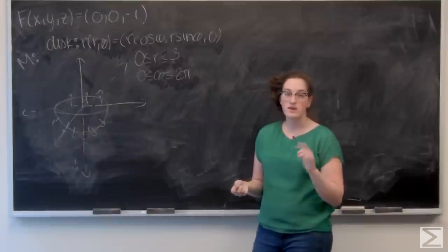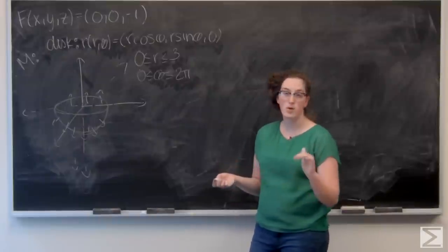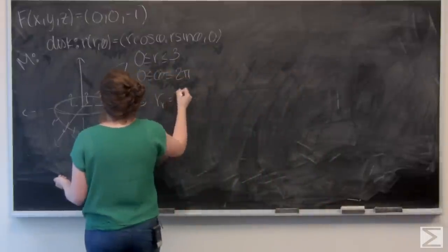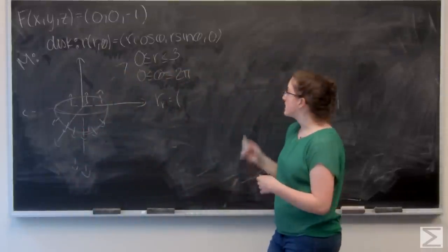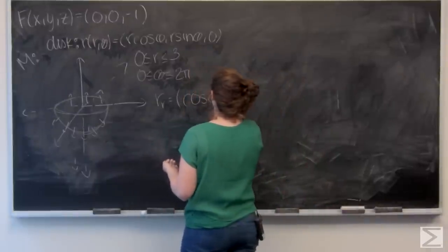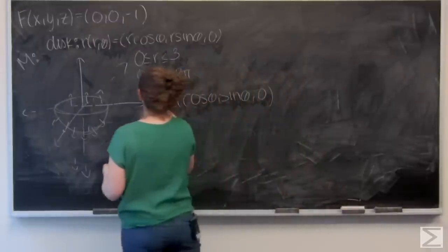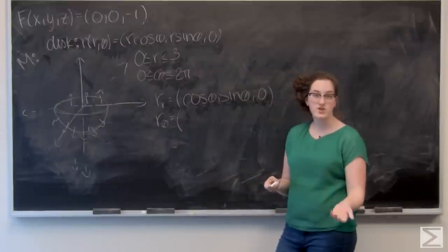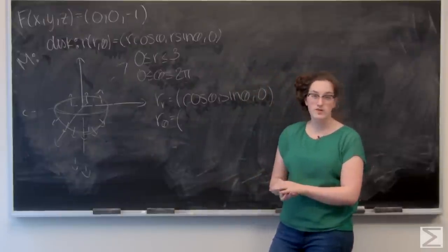I want to dot F with the cross product of the two partial derivatives of r — r sub r and r sub θ. Let's find r_r by differentiating each term with respect to r: (cos θ, sin θ, 0). Now let's find r_θ by differentiating each term with respect to θ: (-r sin θ, r cos θ, 0).